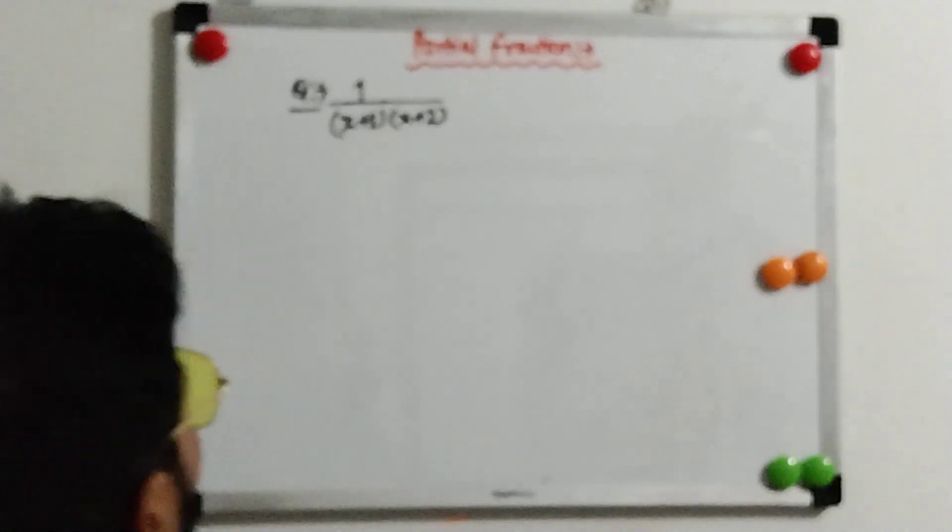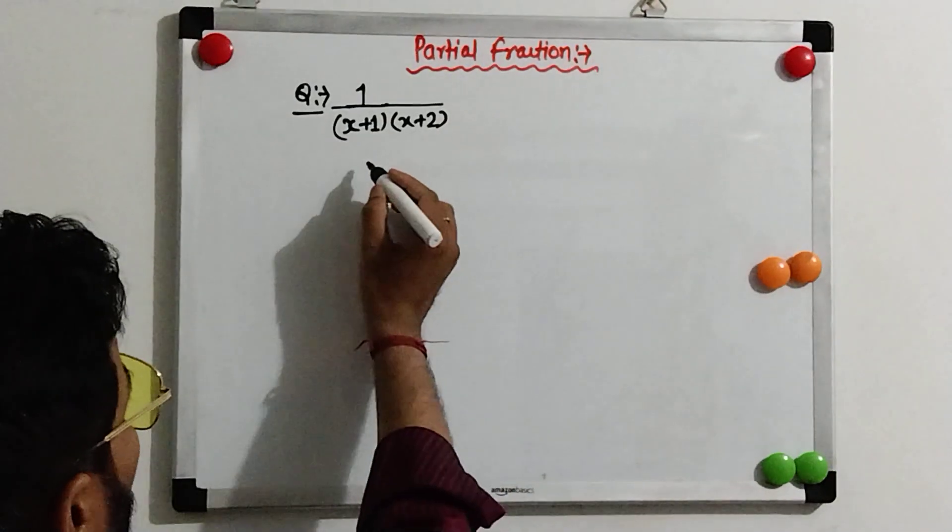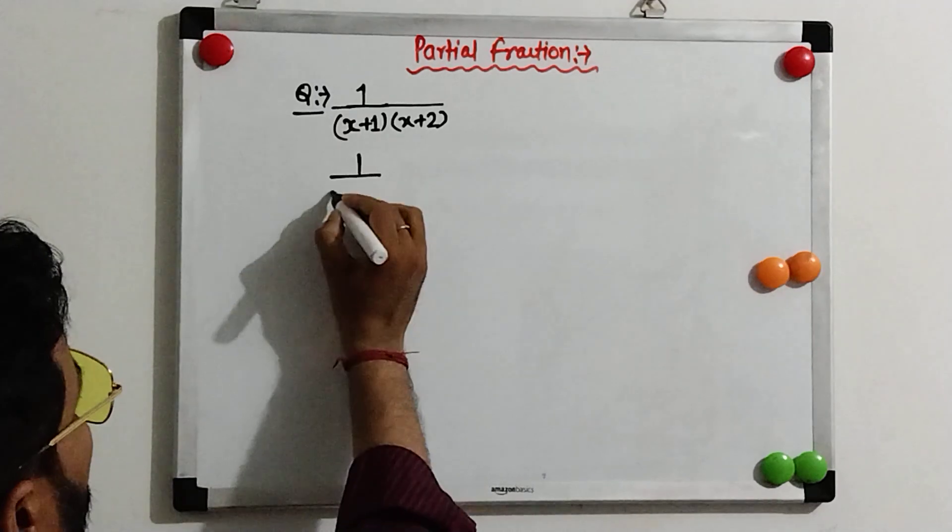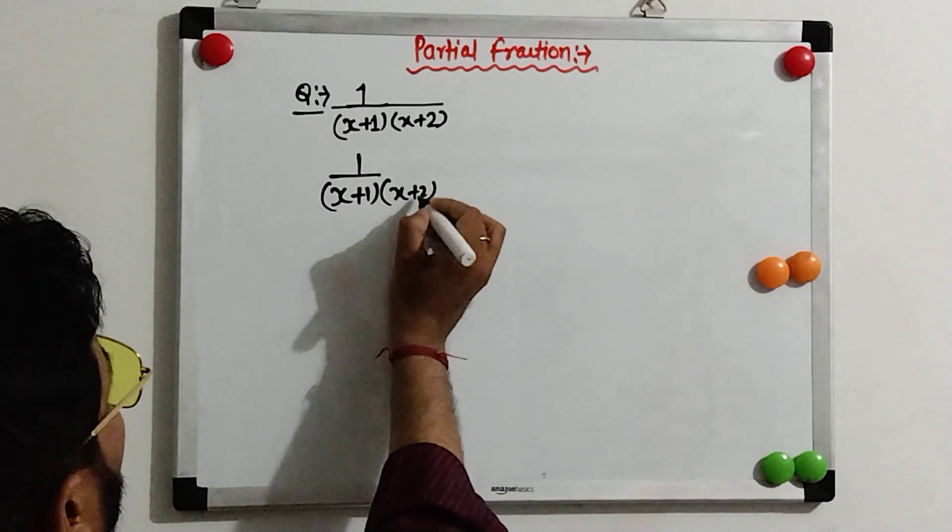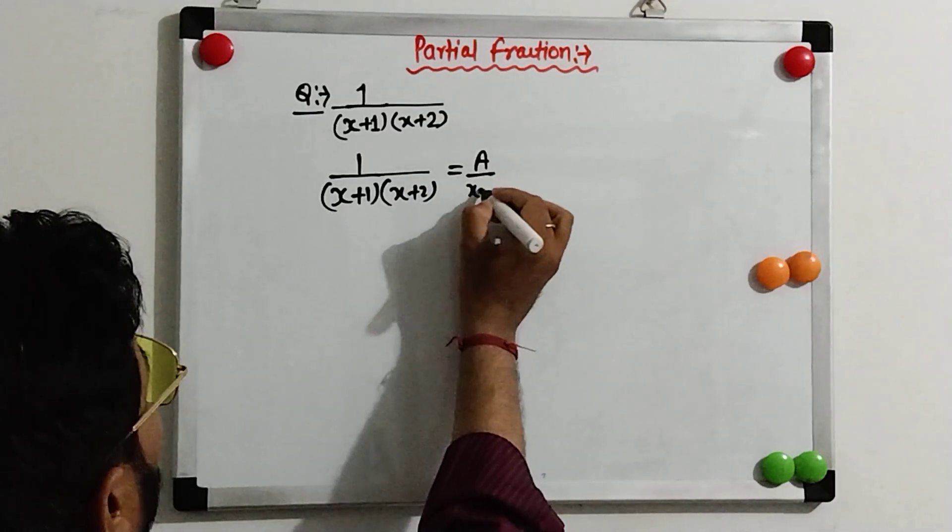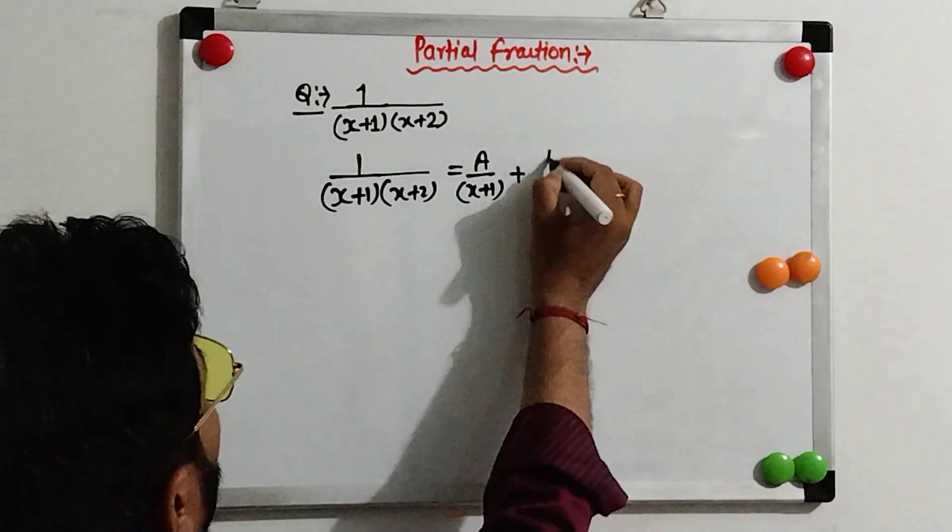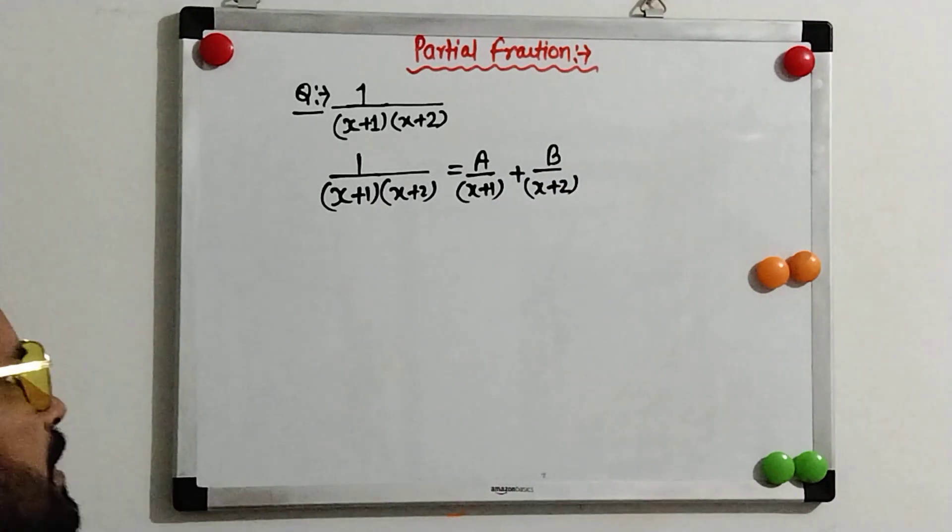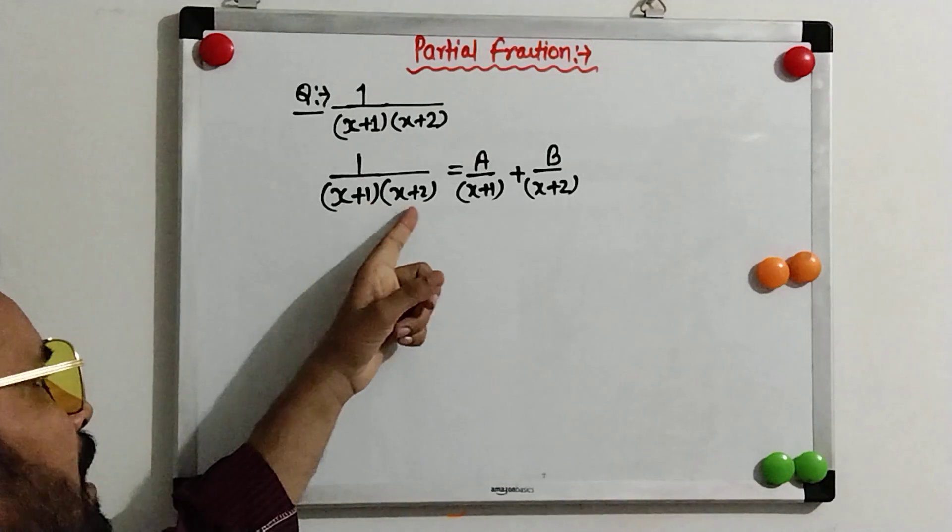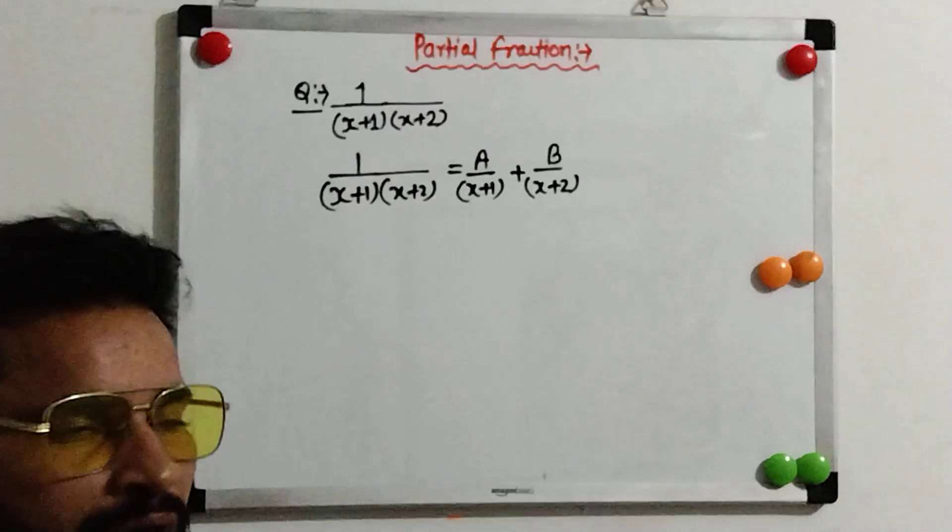First of all, for these, we have to take as A upon (x+1) plus B upon (x+2). If these factors are linear, then you can apply this method.